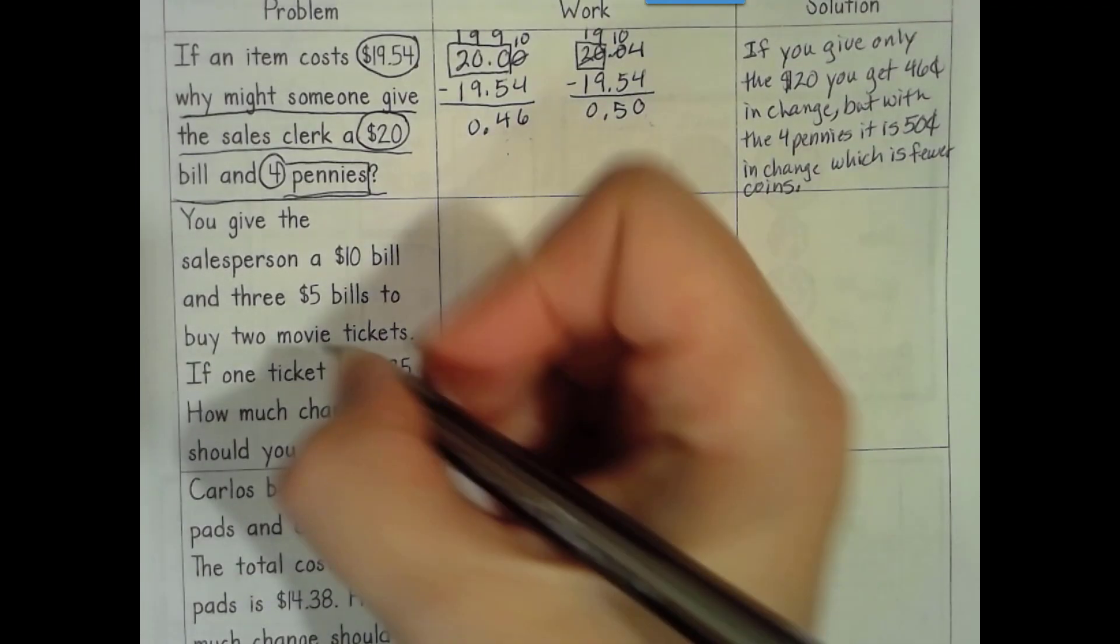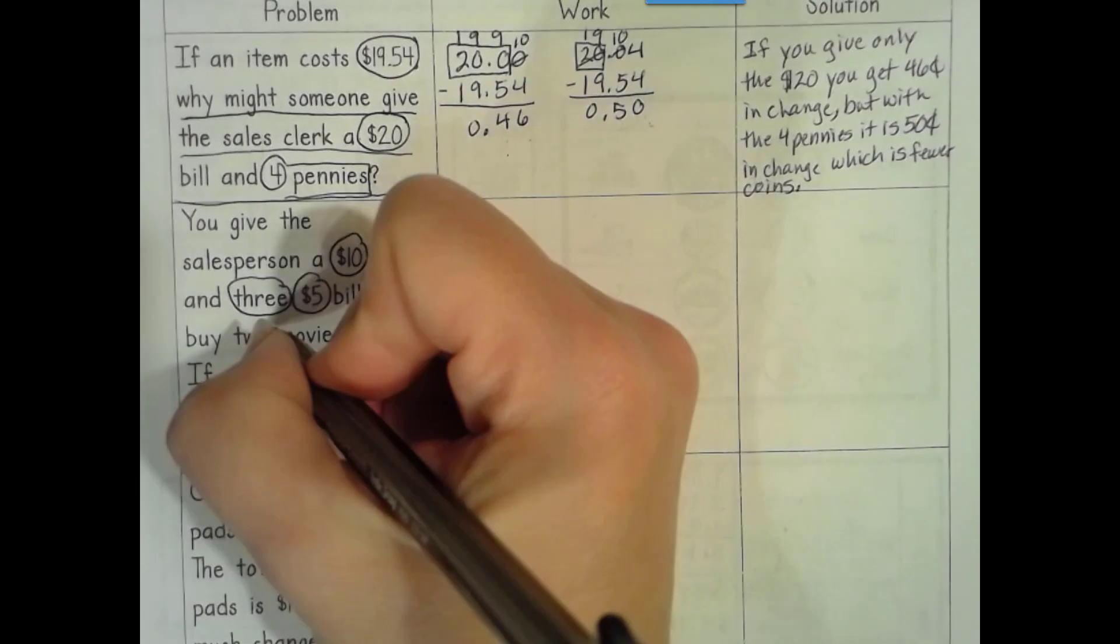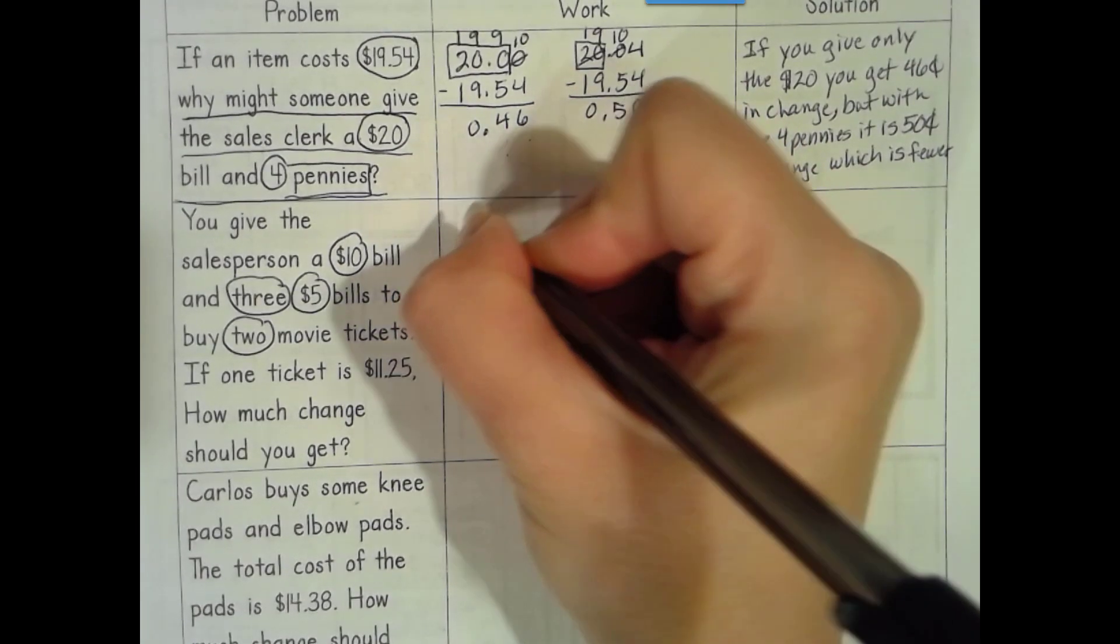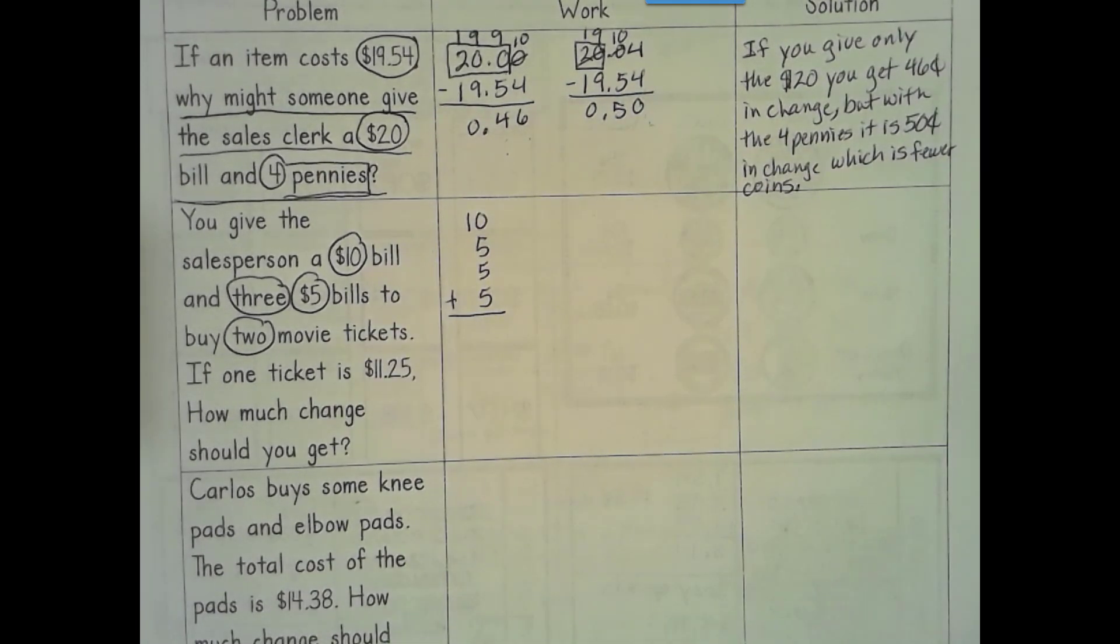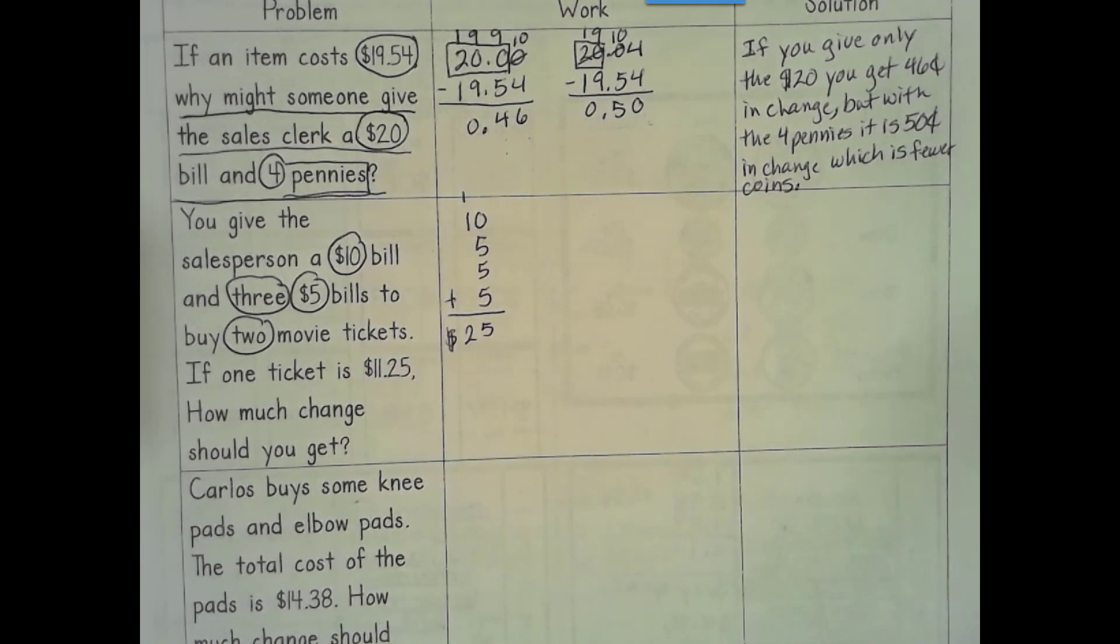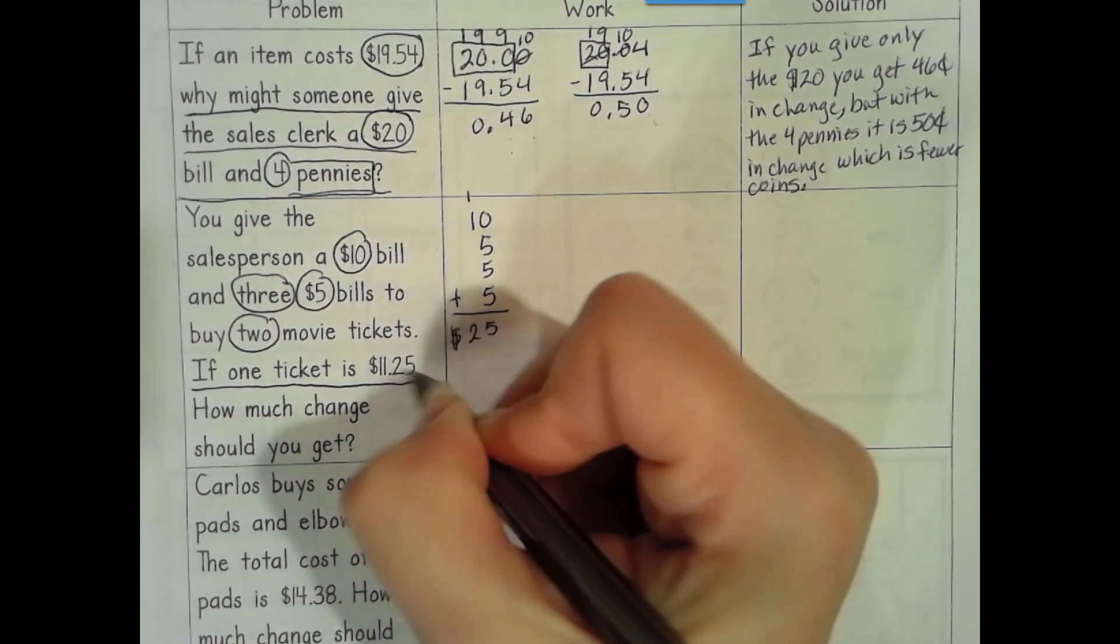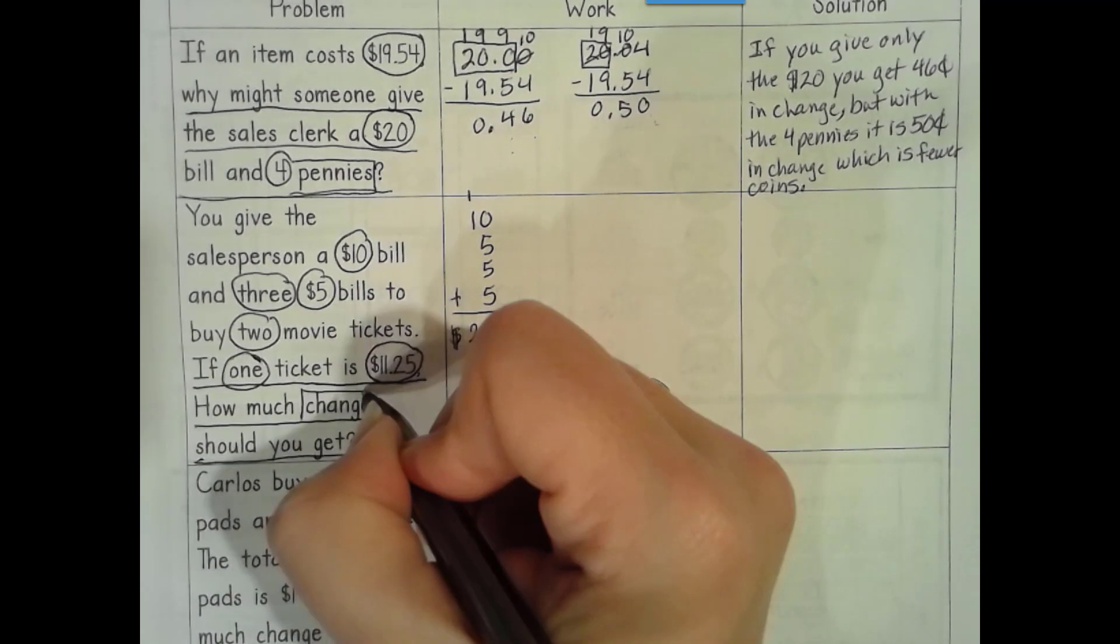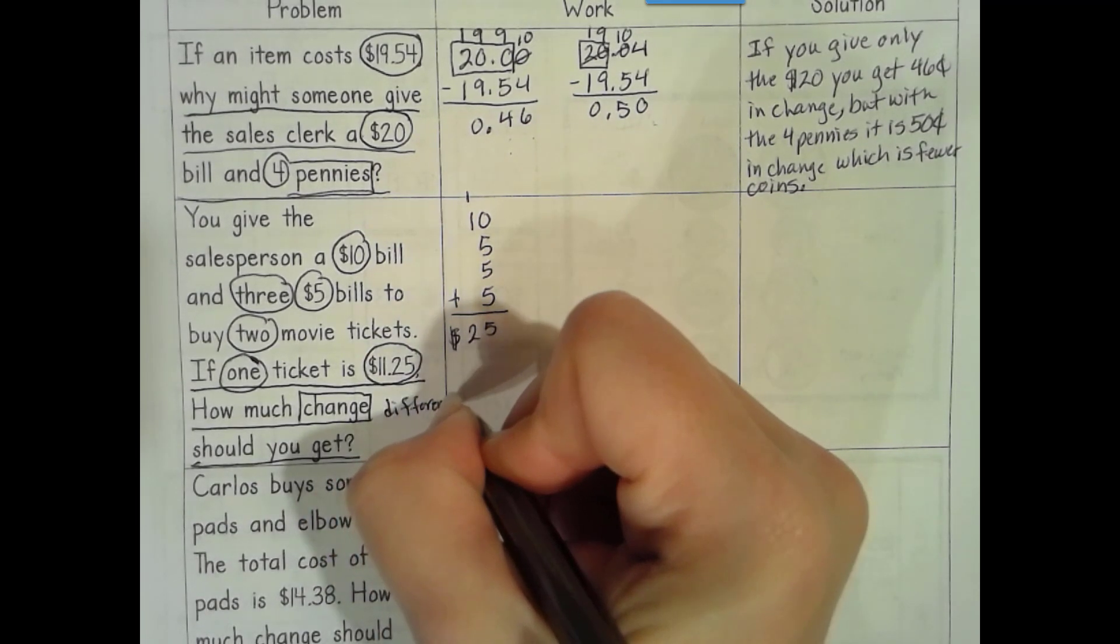Okay, next. If you give a salesperson a $10 bill and three $5 bills to buy two movie tickets. So you have a $10 bill and three $5 bills. So how much money is that in total? Five, 10, 15. So you have $25 and two movie tickets is what you're buying. If one ticket is $11.25, how much change should you get? So change. We're looking for change. That's a difference. A difference. And difference is subtraction. Also, you do know how much total money you have and what you're spending.